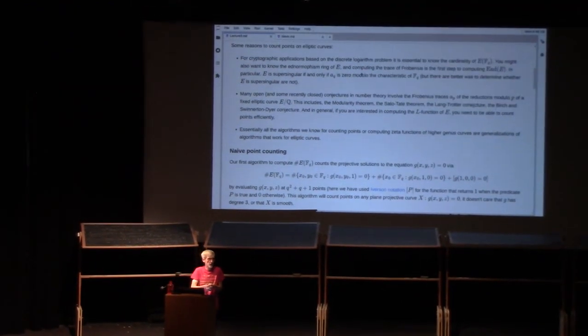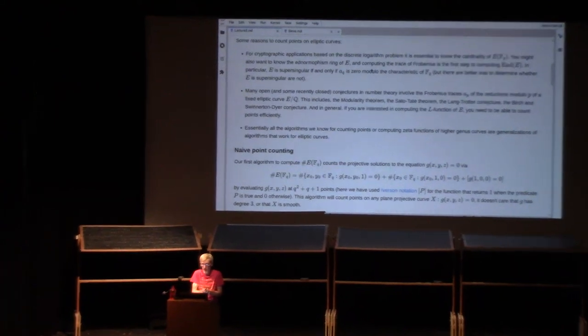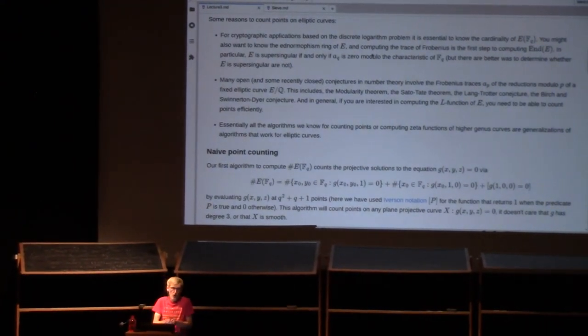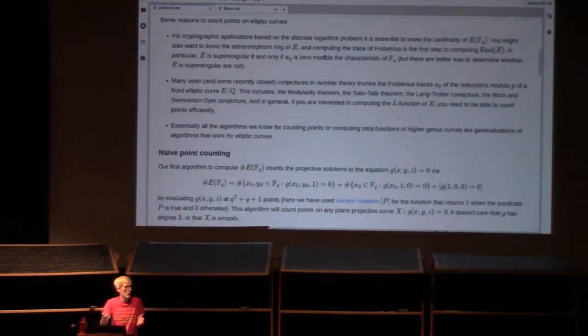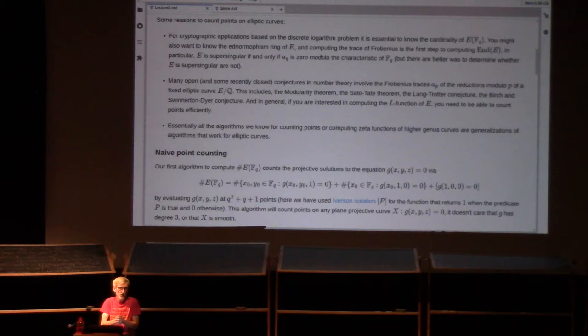Our g is a homogeneous polynomial in three variables of degree three, and we can count points by just counting projective solutions. How do we do that? We could first count all the projected points that have a non-zero z coordinate. That would amount to counting all the possible pairs x_0, y_0 in F_q, such that when we plug x_0, y_0, one into g, we get zero. Then to account for the projected points that have zero z coordinates, some of those will have a non-zero y coordinate. So we should count all of those by plugging in x_0, one, zero. Finally, there may or may not be a single projected point that has a non-zero x coordinate, but the y and z coordinates are both zero. I've denoted this using Iverson notation, which is popularized by Donald Knuth. It's just a very compact way of turning a predicate into an integer that's zero or one. This is a Boolean question. Is g(1,0,0) equal to zero? If the answer is yes, it evaluates to one. If the answer is no, it evaluates to zero.